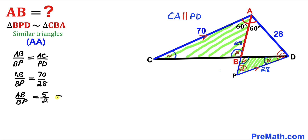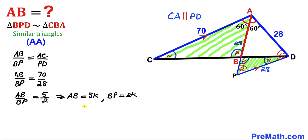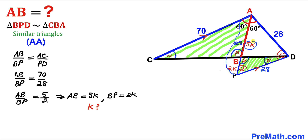Since the ratio equals 5 to 2, we can write AB as 5K and BP as 2K for some constant K. Therefore the whole length AP is going to be 5K plus 2K, which gives us 7K. So AP equals 7K.